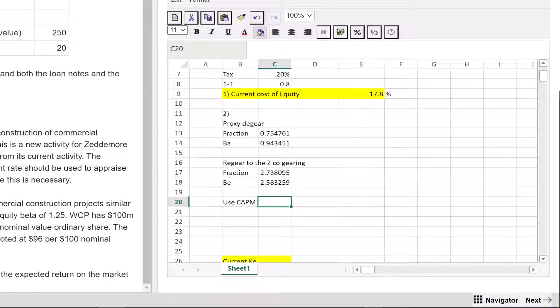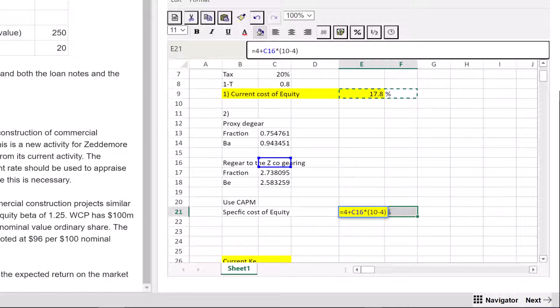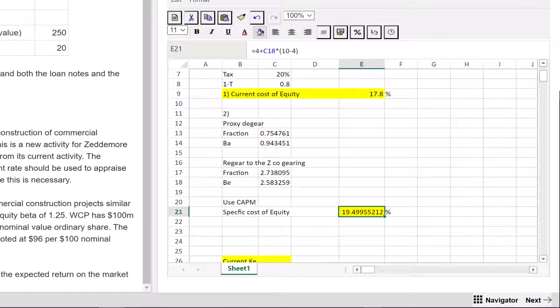Finally, I can now use CAPM. Now I need a specific cost of equity which I'm going to label so the examiner knows. I could copy this down and then just change a figure. I've now got the same figures as before but I just need to reference the new equity beta this one, and that should automatically change it to be what I need. Let's put it to two decimal places so it looks better. So the specific cost of equity is 19.5%.